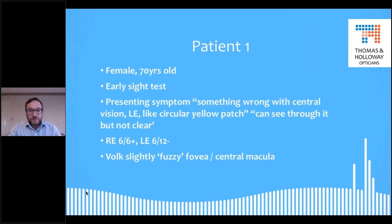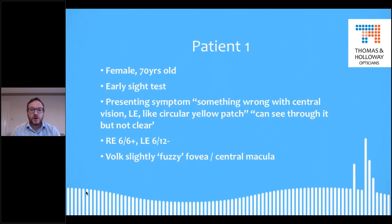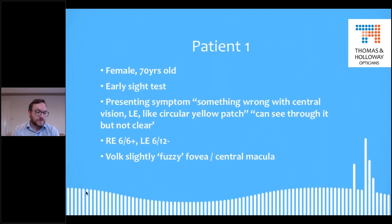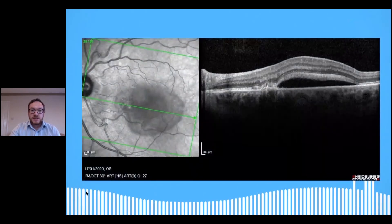So first patient: scenario one — female, 70 years old, early sight test. Presenting symptom: something's wrong with the central vision in my left eye, it's like a circular yellow patch, I can see through it but it's not clear. Sure enough, the vision is 6/12 minus — previously at the last sight test it had been more similar to the right eye, around 6/6. Pressures and things are fine. Volk shows a slightly fuzzy foveal central macular region. When we look at the OCT, this is the image we get.